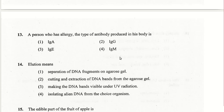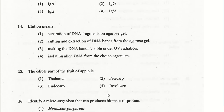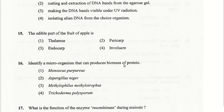The edible part of the fruit of apple is the thalamus. The microorganism that can produce biomass of protein is Methylophilus methylotrophus — not Trichoderma.